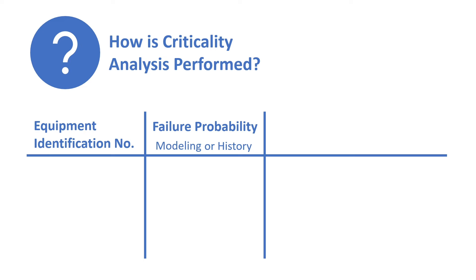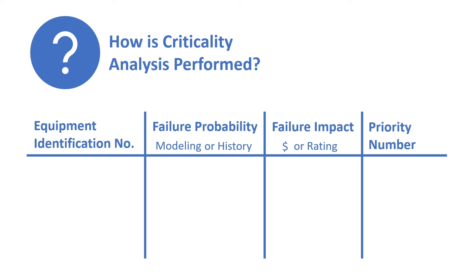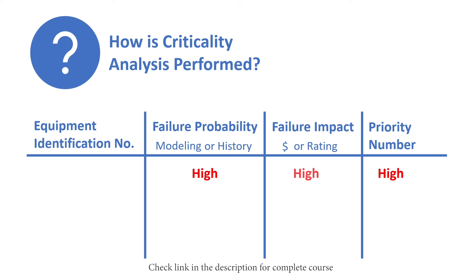Then for each equipment, you assess what will be the impact of its failure. This impact can be expressed in the form of financial loss that a company experiences, for example production loss, or it can be expressed in the form of an impact rating given after considering the safety impact of failure or maybe operational impact. Finally, you get a priority number for each piece of equipment based on the product of its failure probability and its failure impact. This analysis will give a high priority number to equipment if it has a relatively high probability of failure and whose failure impact is also high.